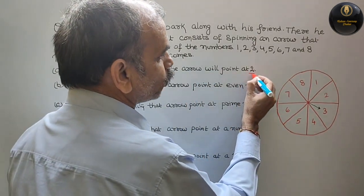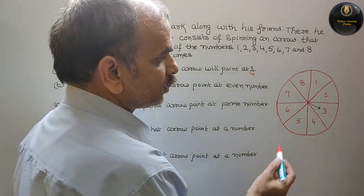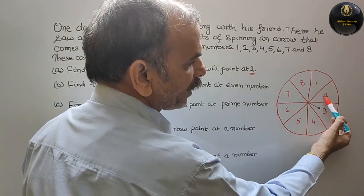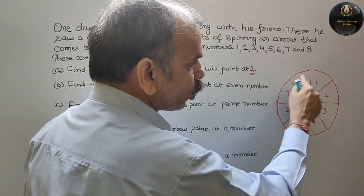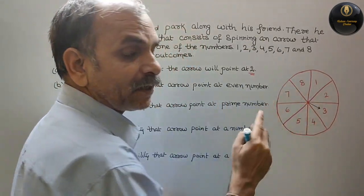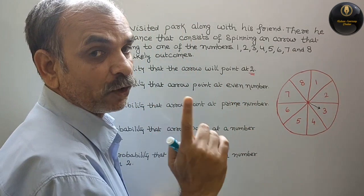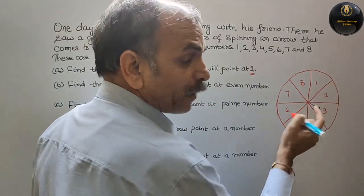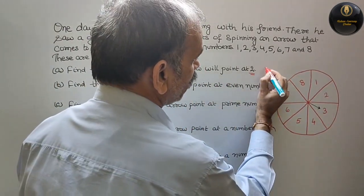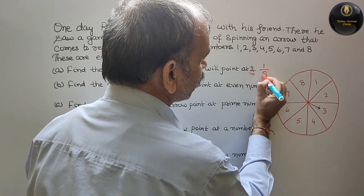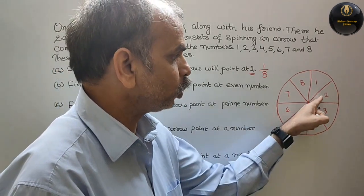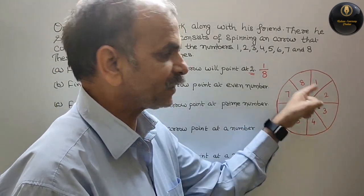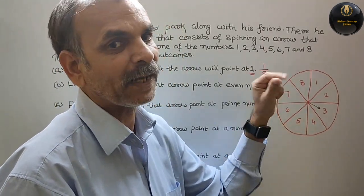Will point at 2. That means 2 is only in one place. And the total numbers are 1 to 8, that means 8. So it becomes 1 by 8. The probability is 1 by 8. 2 is in only one place and total places are 8, so 1 by 8.